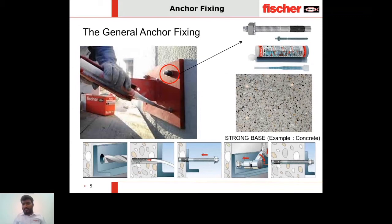The answer is no — you cannot use chemical or mechanical anchors for delicate substrates like boards and cavity materials. Board and cavity materials include gypsum partition walls and board partition walls. We need smart, intelligent, and especially engineered anchors to be used for drywall or board material applications.